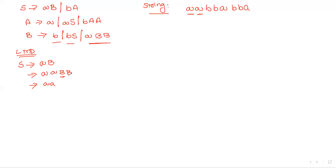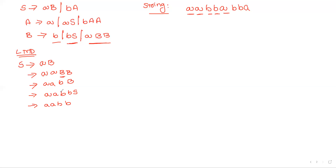In leftmost derivation, moving left to right, the next non-terminal to replace is capital B. The next symbol needed is 'b', so capital B is replaced with small 'b' followed by S. Now 'aabb' is completed. The next symbol is 'a', so S is replaced with the production starting with 'a'. The process continues matching the remaining string.